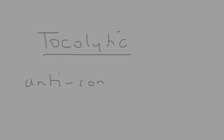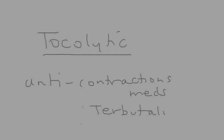If a woman does go into uterine hyperstimulation, you can reverse it by giving something called a tocolytic. Tocolytics can be thought of as anti-contraction medications. The two most common are terbutaline and magnesium sulfate. The first thing to do is to discontinue the medication that caused the hyperstimulation — for example, DC the oxytocin. If that doesn't work, then you would give a tocolytic.